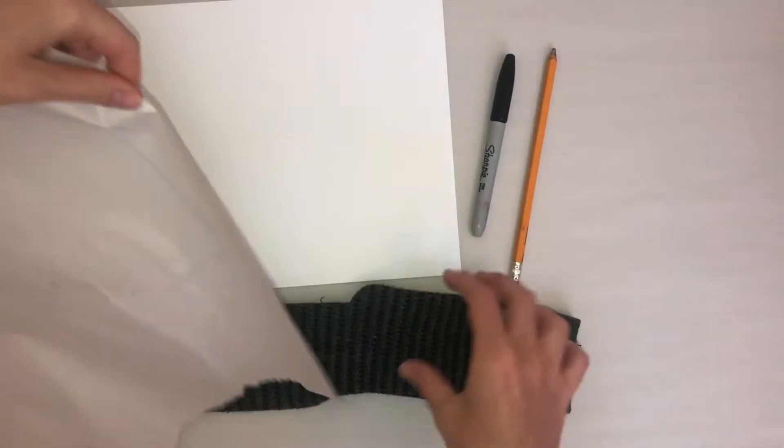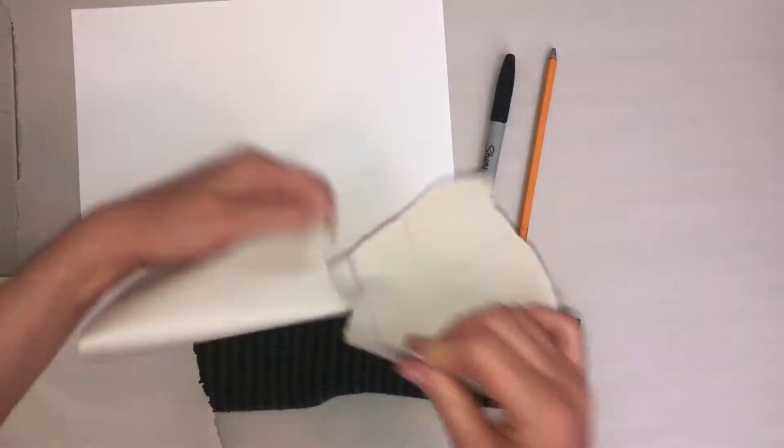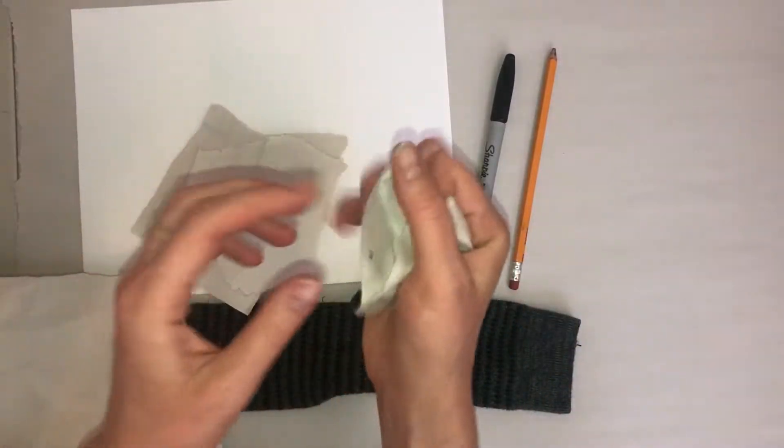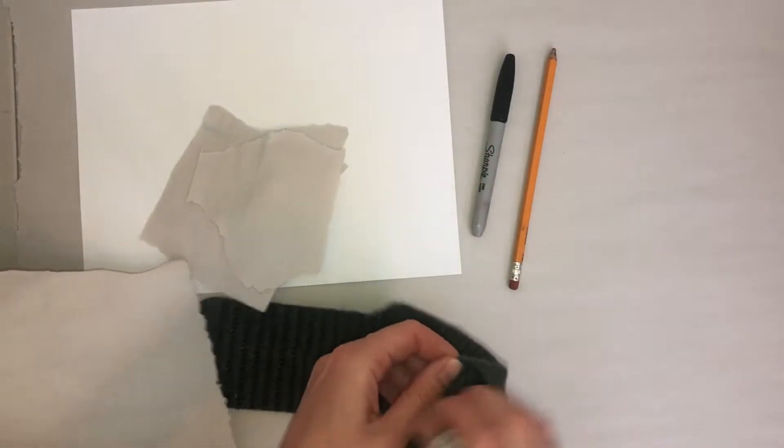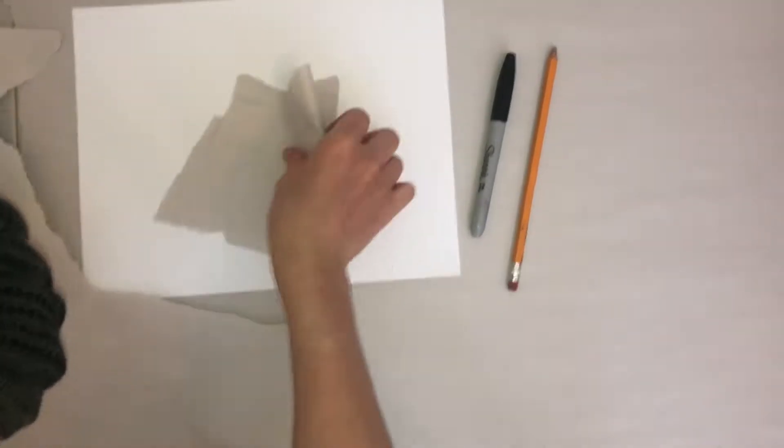We're going to start by tearing the recycled paper up into medium-sized pieces. Crumble up these pieces and start to put them inside of your sock. So you're going to stuff your sock so it's all filled up with paper.